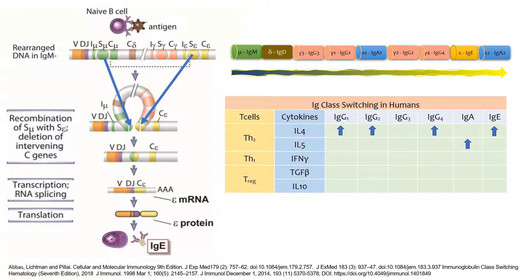Another TH2 response, characterized by interleukin-5, has been found to promote the switch to IgA. The TH1 response, driven by interferon, can stimulate or drive the switch to IgG3, while TGF-beta promotes IgA and interleukin-10 promotes the switch to IgG1 and IgG3.